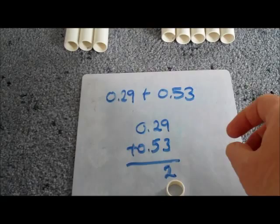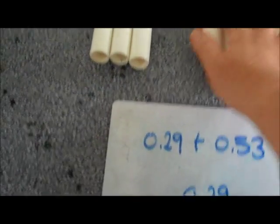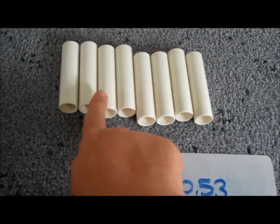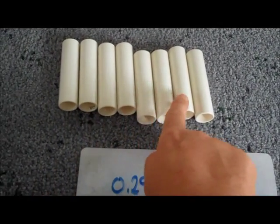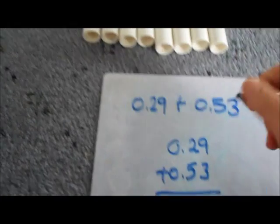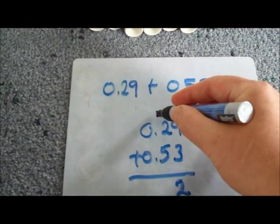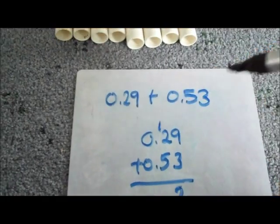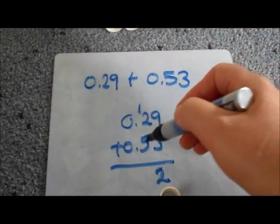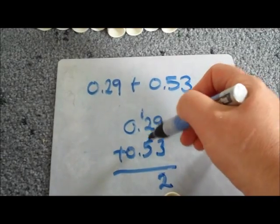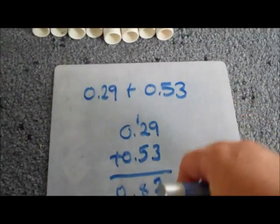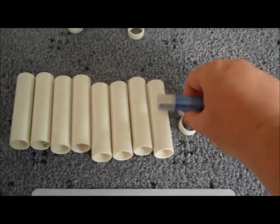And what I've got left is one, two, three, four, five, six, seven, eight which is the one that I had to carry before to remember that I had swapped my ten hundredths for one tenth. So now I've got one, two, three and eight. So I've got eight tenths and two hundredths.